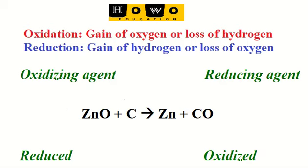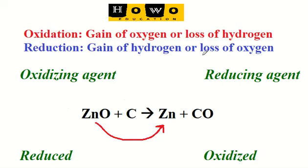Let us have a look at this reaction in which zinc oxide reacts with carbon forming zinc and carbon monoxide. Zinc oxide is losing oxygen and forming zinc, so we can say that this is the reduction part of the reaction, as in the reduction part there is loss of oxygen. Whereas the carbon is gaining oxygen and forming carbon monoxide.